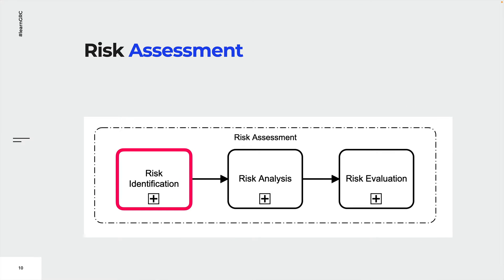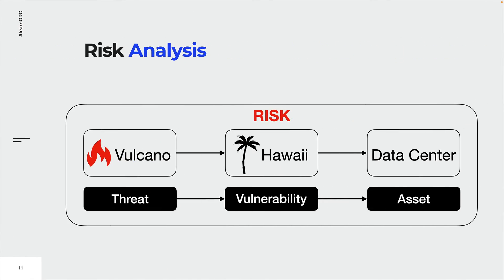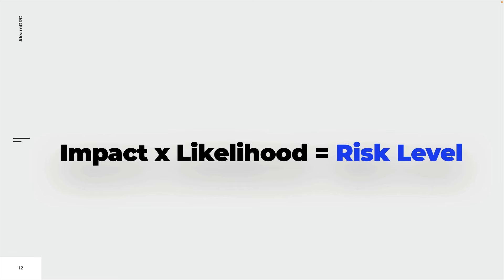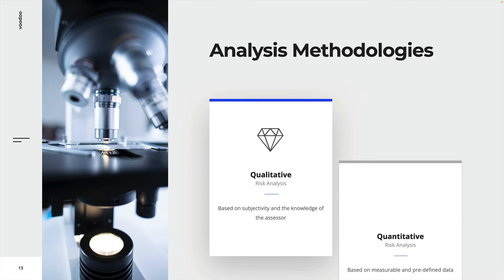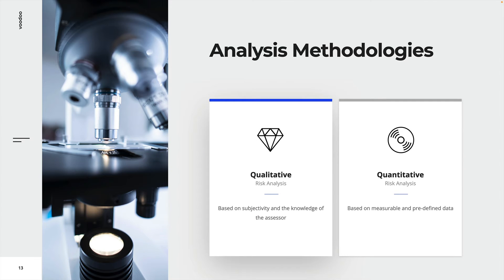Now that we have identified a risk, it's time to analyze it. The common definition of a risk is a threat that exploits the vulnerability of an asset. In our example, the volcano exploits the geographic exposure of the data center. The goal of risk analysis is to determine the level of risk. Risk levels are determined by analyzing the impact and the probability of risks. There are two types of analysis methodologies: qualitative risk analysis and quantitative risk analysis.